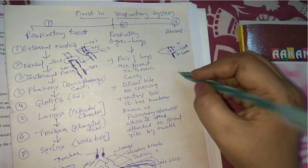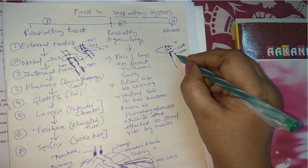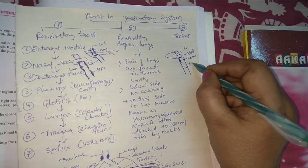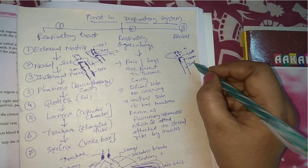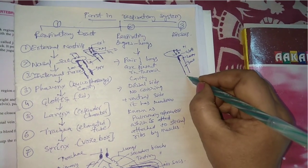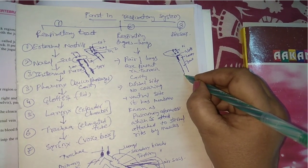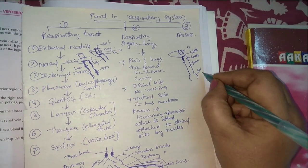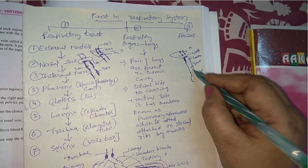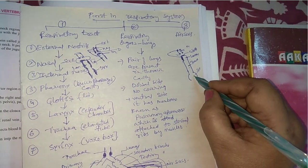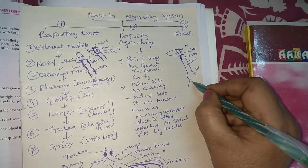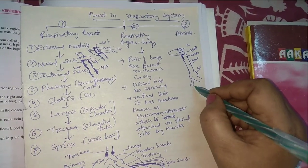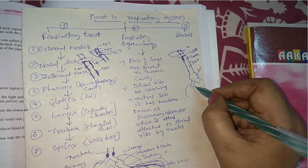The bucopharyngeal cavity opens into a wide expanded chamber known as the larynx. This larynx opens into an elongated tubular structure known as the trachea. At the posterior end of the trachea, a sound box is present known as the syrinx — a special character present in birds. The trachea, after giving the syrinx, divides into two branches, right and left bronchi.